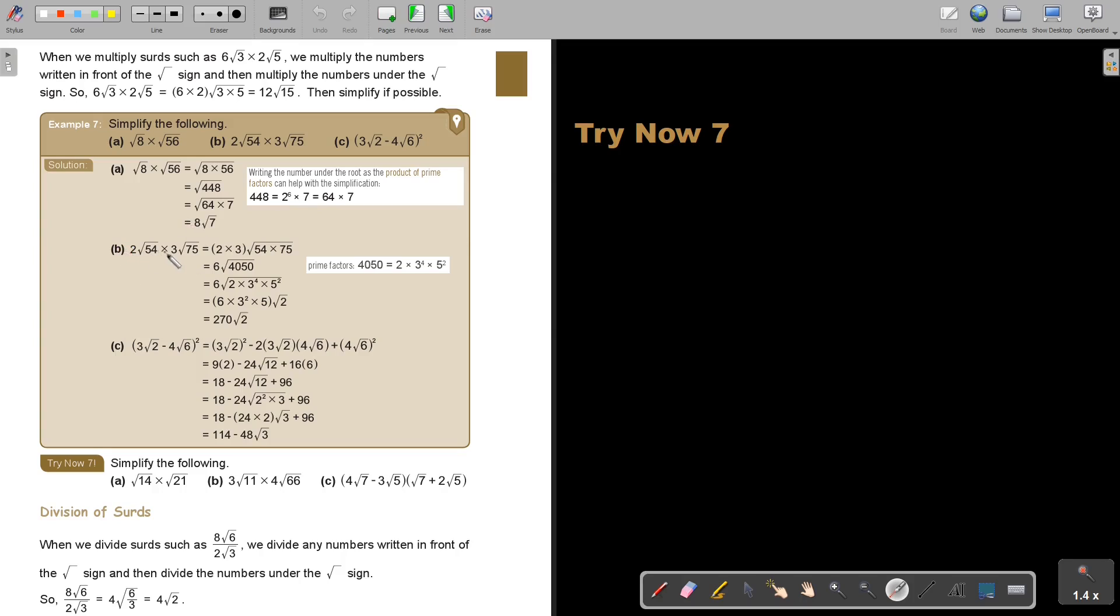The same here, first multiply the numbers in front that's 6, then the inside, and then the best is to break it up into prime factors. Then it's easy because then you can see what can come out. So this is 4 divided 2 it's 2, 2 divided 2 it's 1, and then you multiply this is 9 times 5 times 6 which will give you this and there is the square root 2.